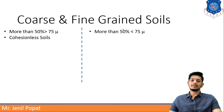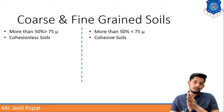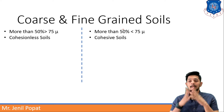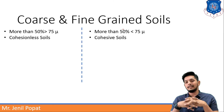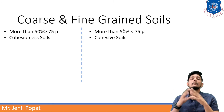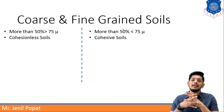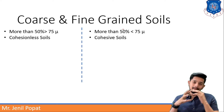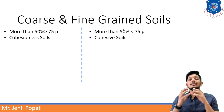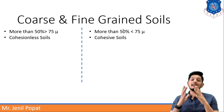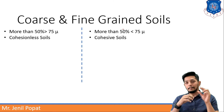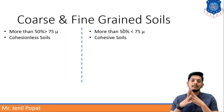Let us differentiate coarse-grained and fine-grained soils. If 50% or more than 50% of soil is having diameter more than 75 microns, then the soil will be coarse-grained soil. The grains are coarse because more than 50% of grains are having size greater than 75 microns. Same way, if more than 50% of the particles are less than 75 microns in size, then it is fine-grained soil.